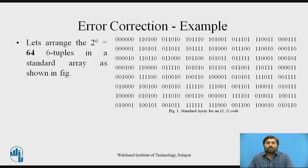Figure one shows the standard array of 2 raised to the power n-tuples, where n equals 6. So 2 raised to 6 equals 64. There are 64 total 6-tuples in the standard array, each tuple having 6 bits.